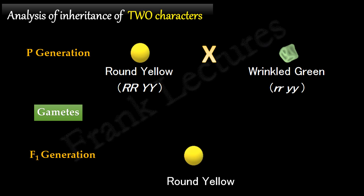All the gametes produced by the plant with round yellow seed will be of the same type, that is capital R, capital Y. Recall that a gamete will receive one allele for each character, that is one for seed shape and one for seed color.